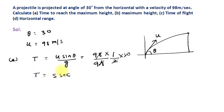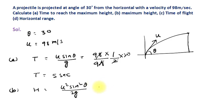Next, maximum height. The formula for maximum height is H = U²·sin²θ / 2g. Here U = 98 m/s. So we calculate 98 × 98 × sin²30° / (2 × 9.8). Sin²30° = (1/2) × (1/2) = 1/4. So it becomes 98 × 98 × (1/4), divided by 2g.